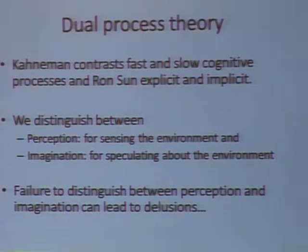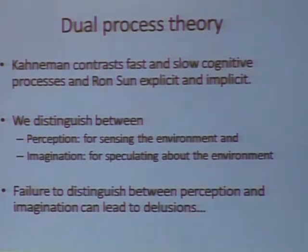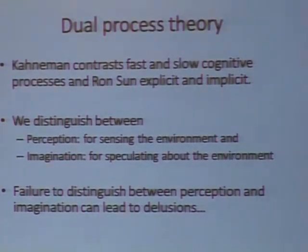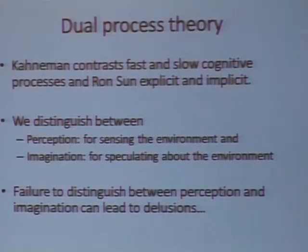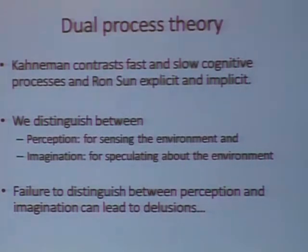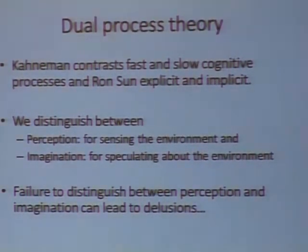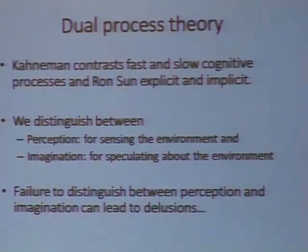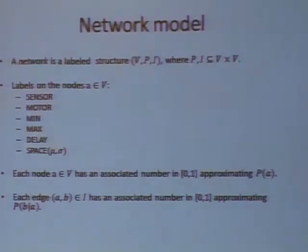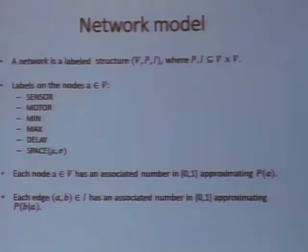We use a model of Dual Process Theory — not the one that Kahneman used, which contrasts fast and slow cognitive processes, and not the one that Ron Sun uses with explicit and implicit processes or knowledge. Instead, we distinguish between perception, which we use for sensing the environment, and imagination, which we use for speculating about the environment. We believe that distinction is very fundamental. If you don't distinguish between perception and imagination, it can lead to delusions — misconceptions of reality. It's actually a psychiatric condition. So it's not good for a person to have delusions, and it's also not good for an AGI system. It's worthwhile keeping those two processes apart.